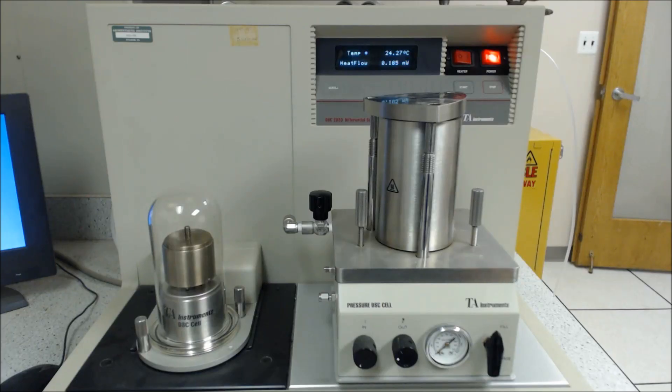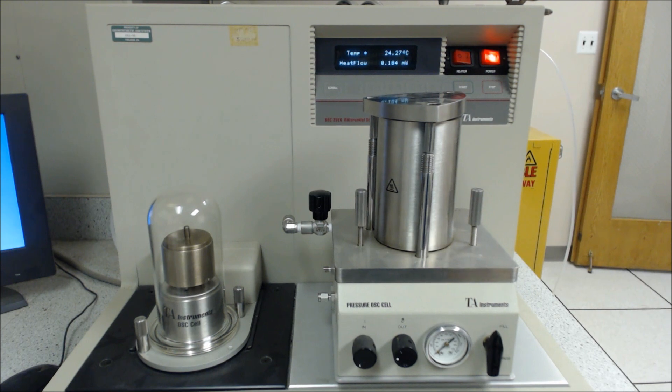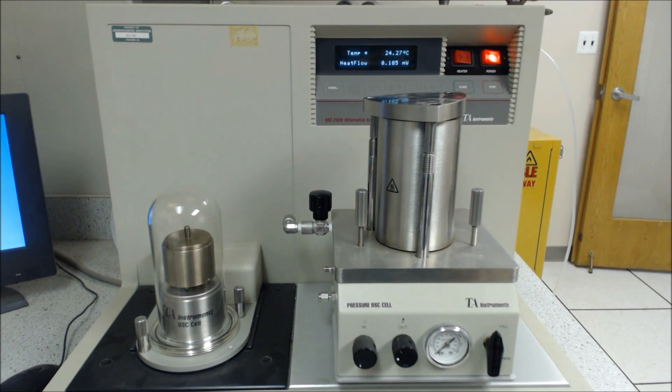We're here today in the chemical fingerprinting lab at GSI taking a look at ASTM D3895 for determining the oxidative inductive time of polyolefins by differential scanning calorimetry along with ASTM D5885 for OIT determination at high pressure.